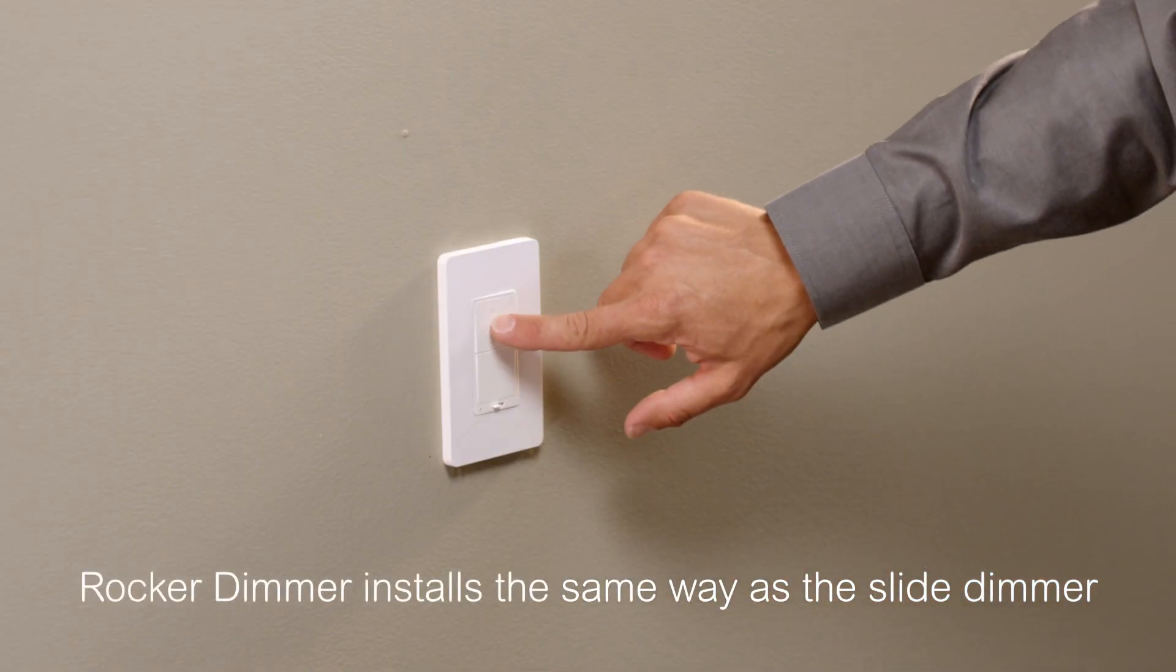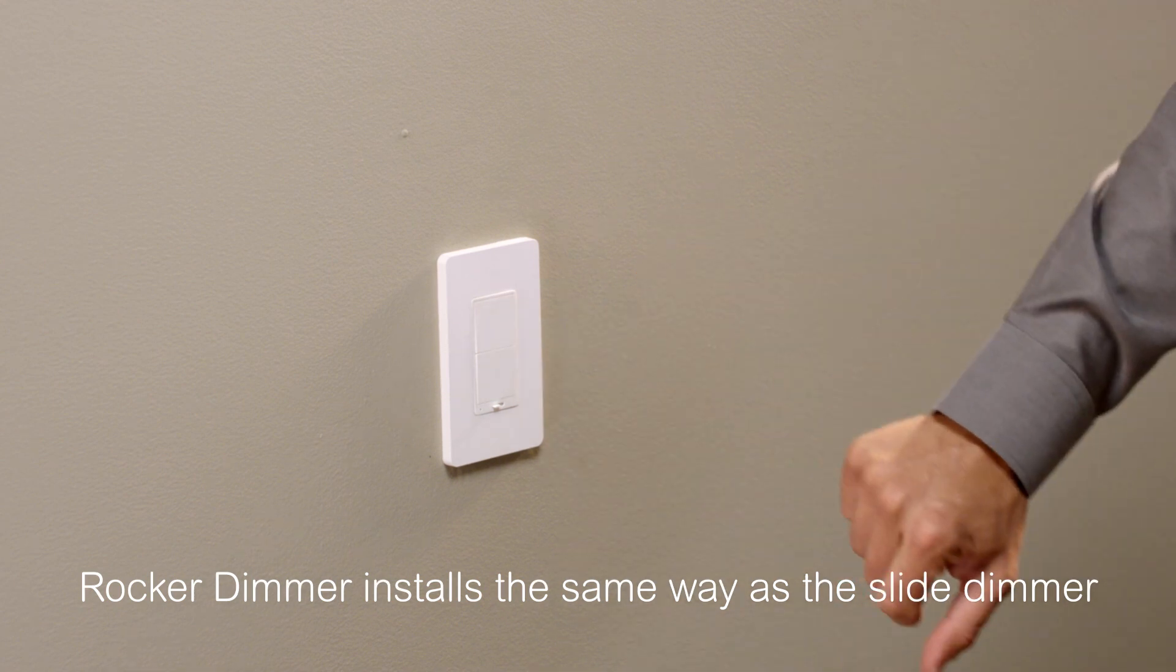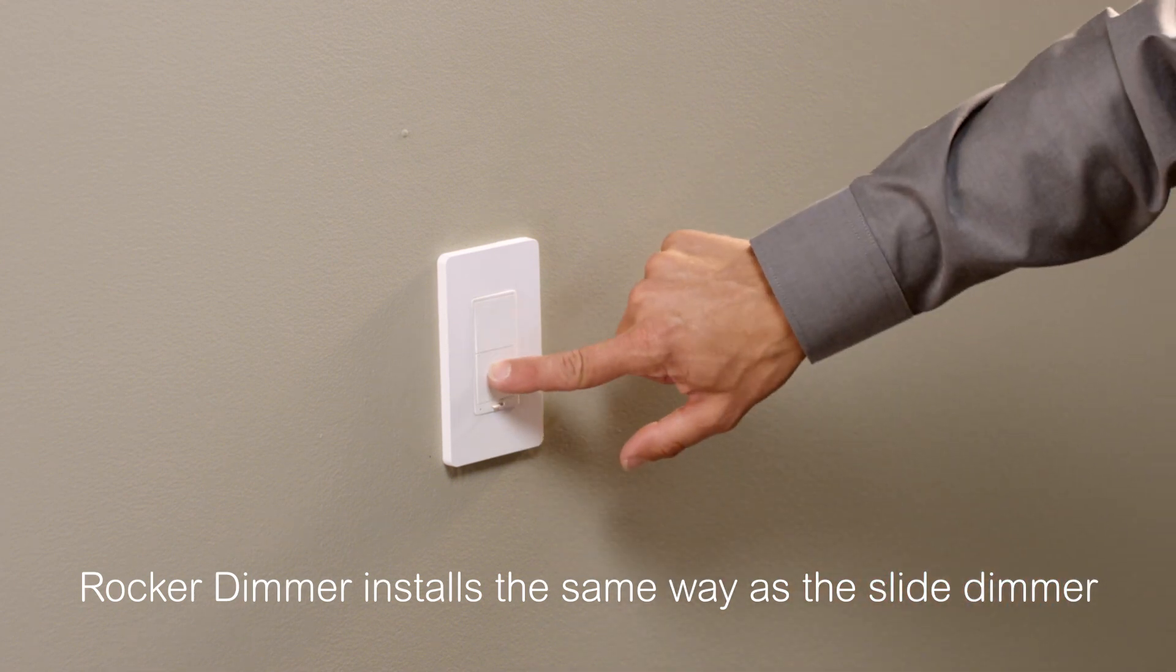To operate the rocker dimmer, hold at the top of the dimmer for full brightness or bottom for dimming.